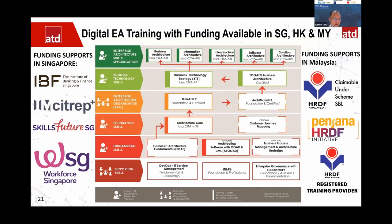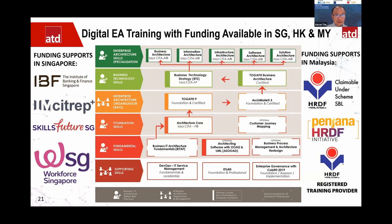Here is good news for FSI professionals in Singapore and Malaysia. In Singapore, if you work in financial services or are a Singapore citizen or permanent resident, you can apply for the IBF grant — which covers 90 percent, and you can also claim SkillsFuture for the remaining 10 percent, making it essentially free. In Malaysia it is claimable under HRDF, PENJANA, and related schemes. Hong Kong also has a government grant available for architecture programs.